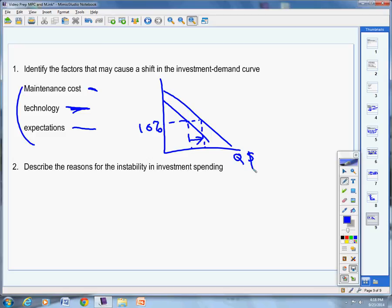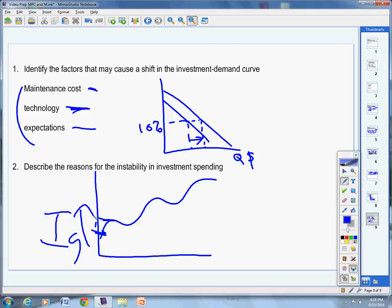Now, number two, describe the reasons for the instability in investment spending. And we've talked about this before, but think about it. Remember, here's the business cycle, right? Peaks and valleys. Well, when things are going good in here, businesses are like, yes, things are great. Let's invest. Well, when things start heading down in here, businesses are like, you know what? We don't have to build this plant. Why would we invest now? Let's wait. And why do we wait? Because it's postponable.